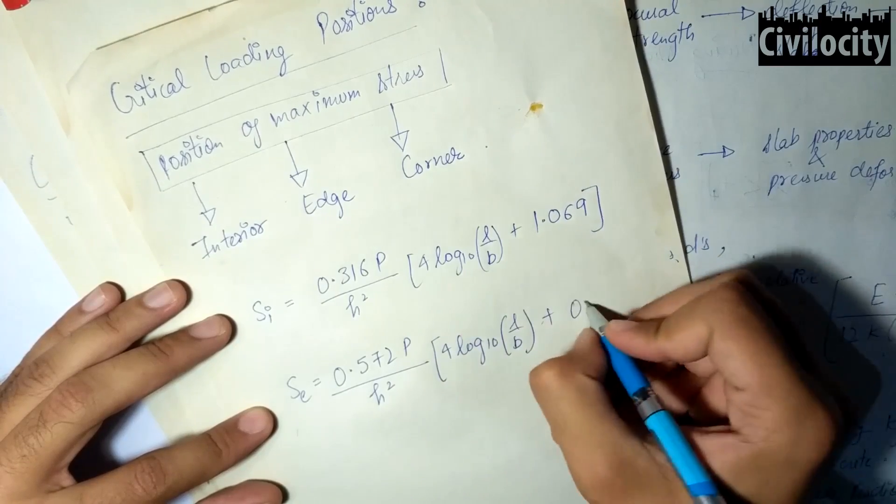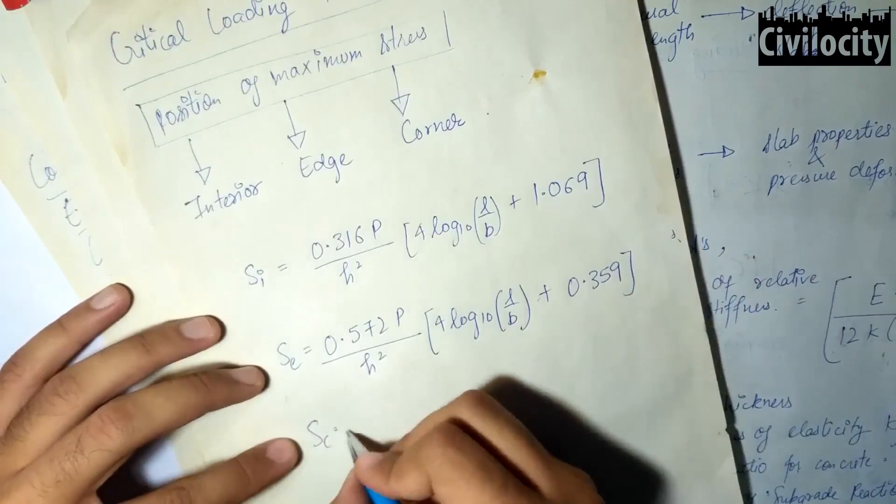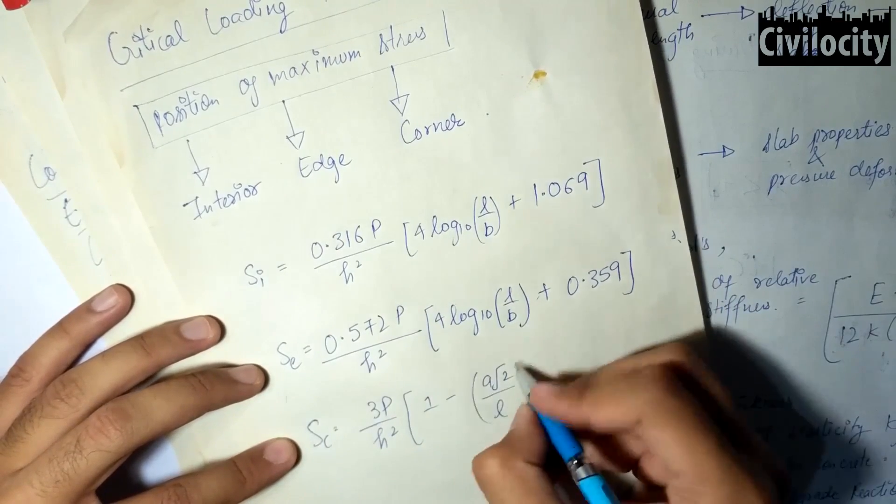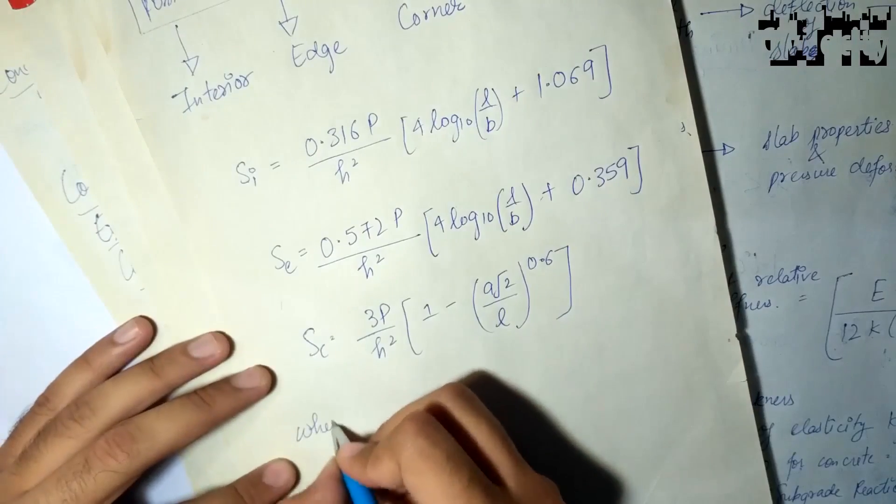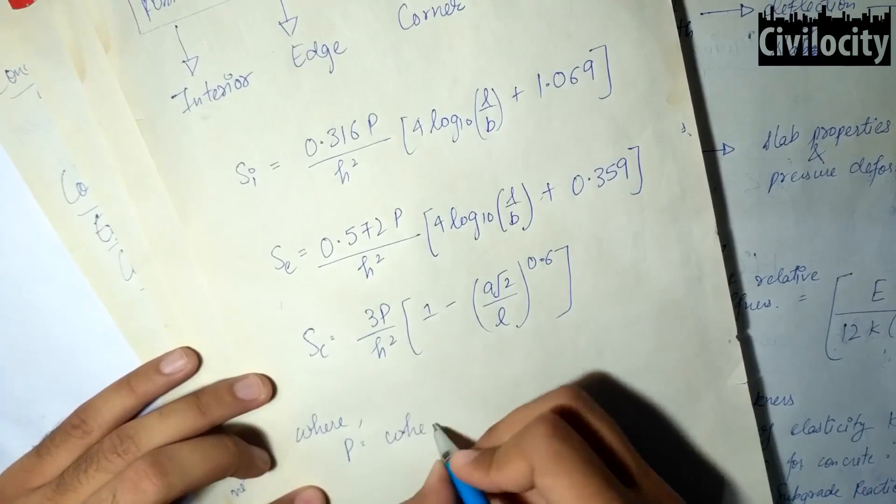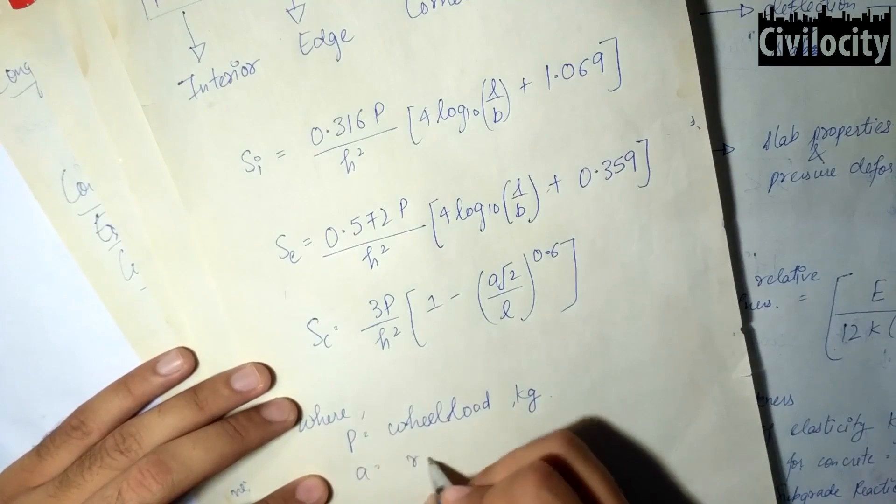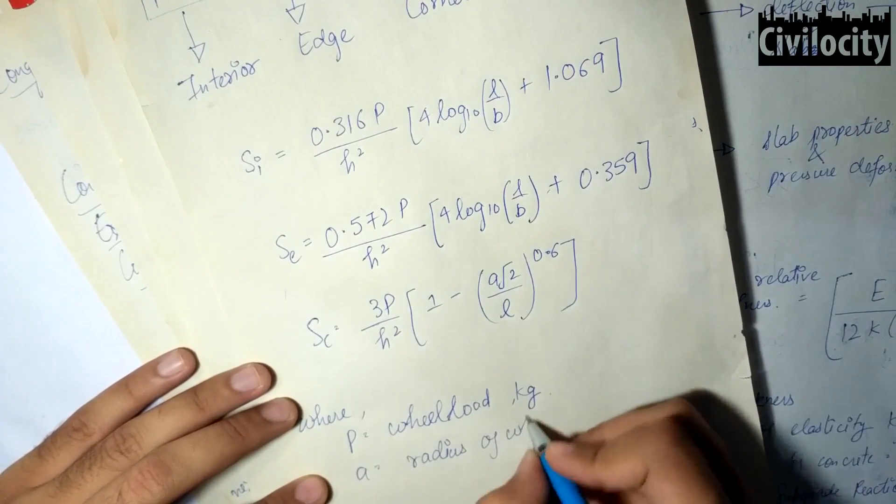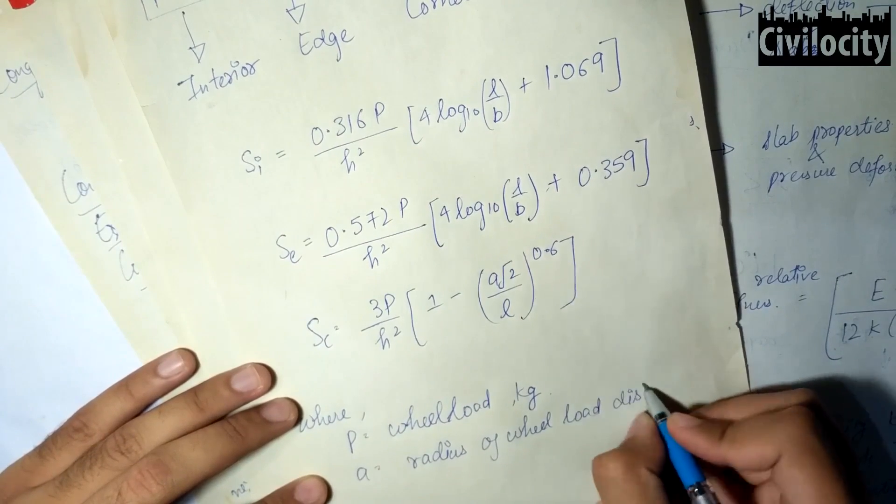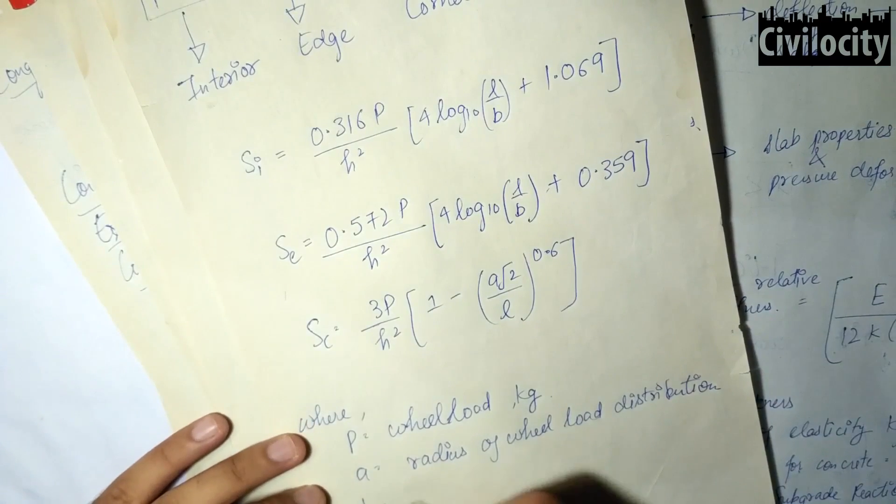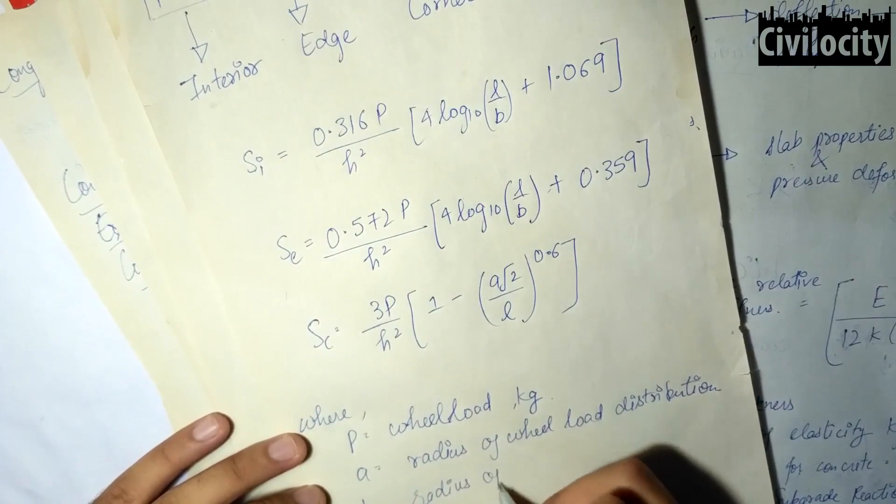The stress due to edge loading is given as Se equals 0.572p divided by h squared times 4 log 10 L by B plus 0.359. And stress due to corner loading is given as Sc equals 3p by h squared times 1 minus A root 2 divided by L raised to the power 0.6.